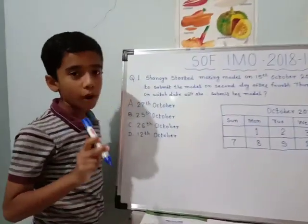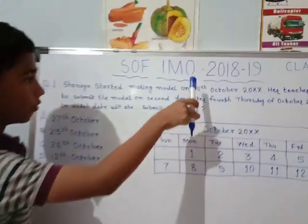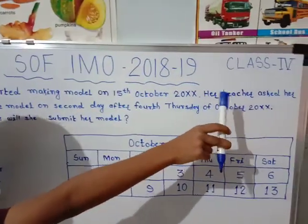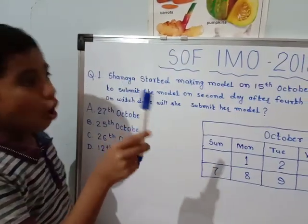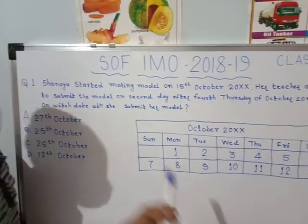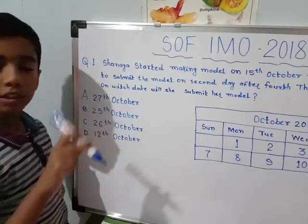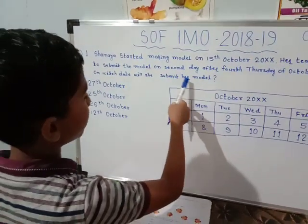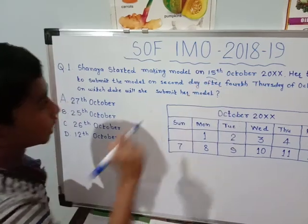Question number 1. Shania started making a model on 15th October 2020. Her teacher asked her to submit the model on the 2nd day after the 4th Thursday of October 2020. On which date will she submit her model? We have to find on which date she would submit her model.